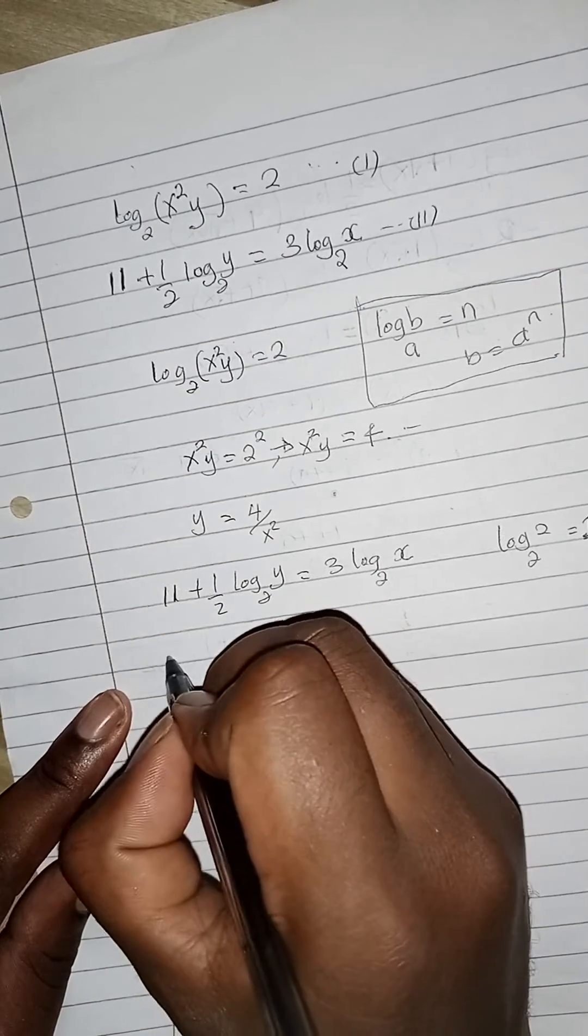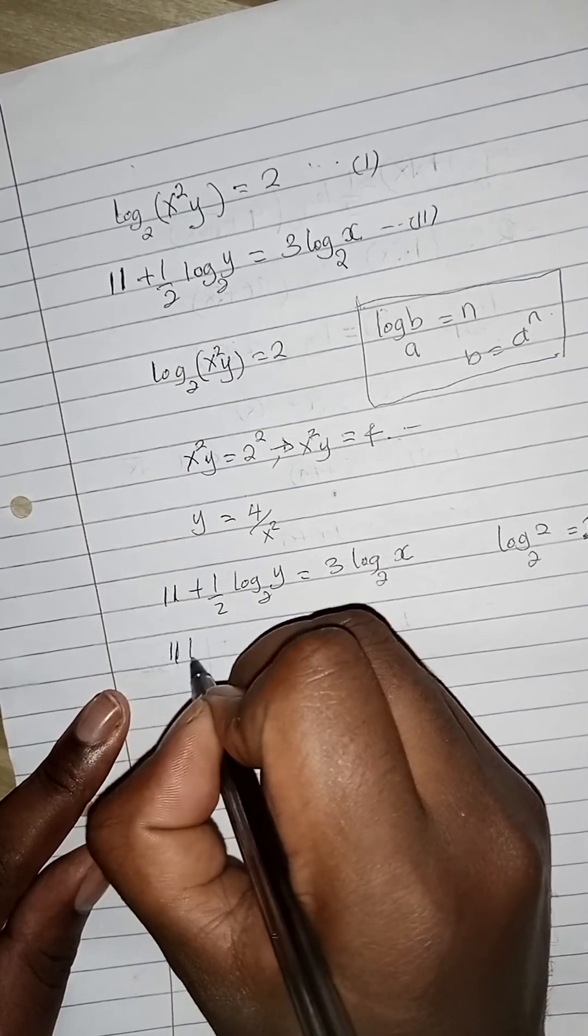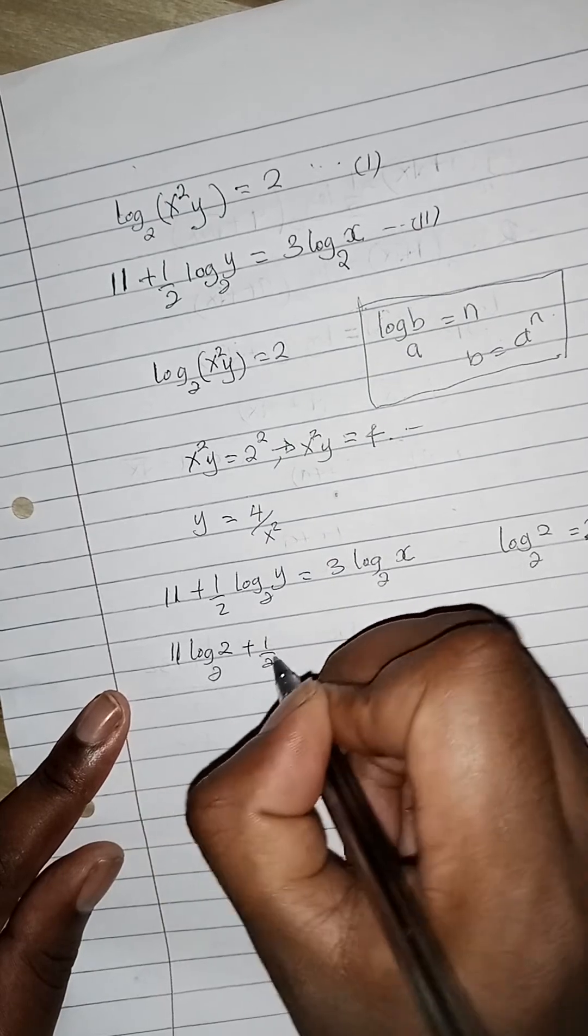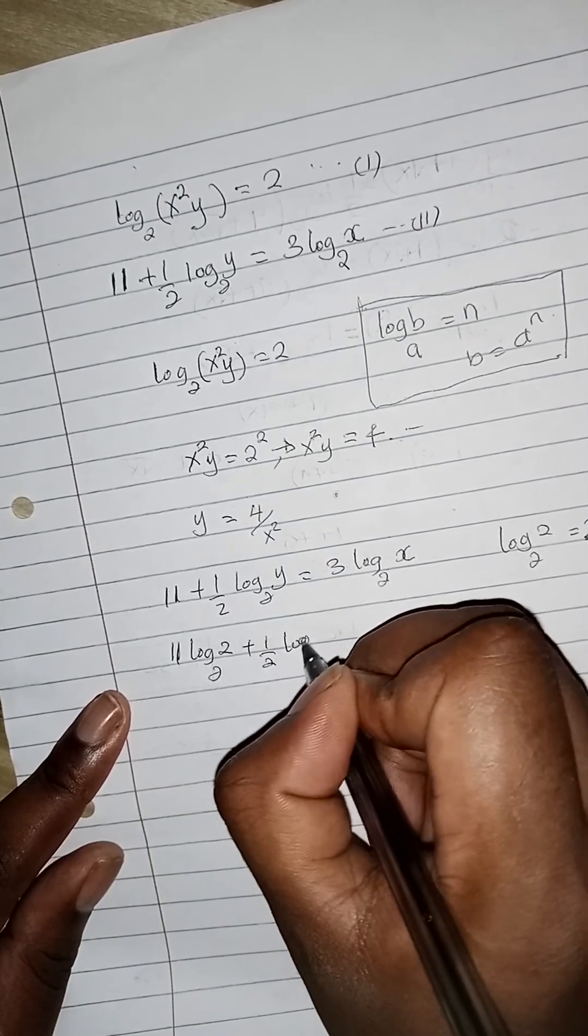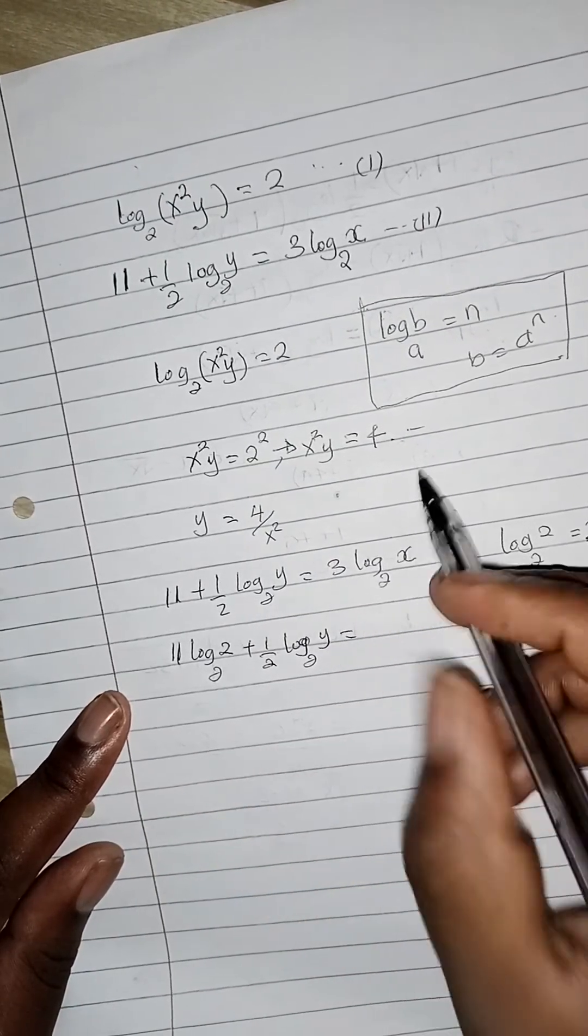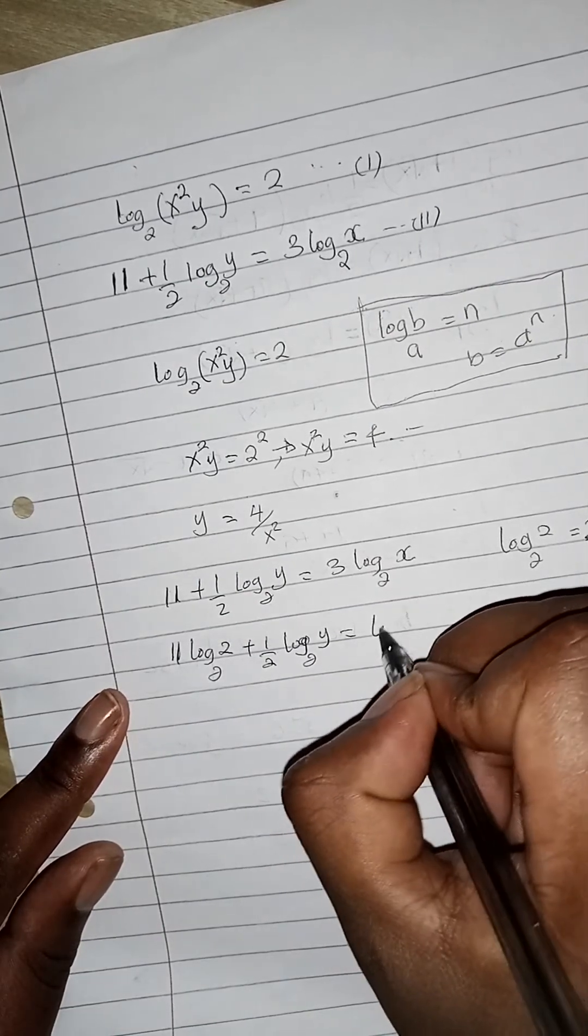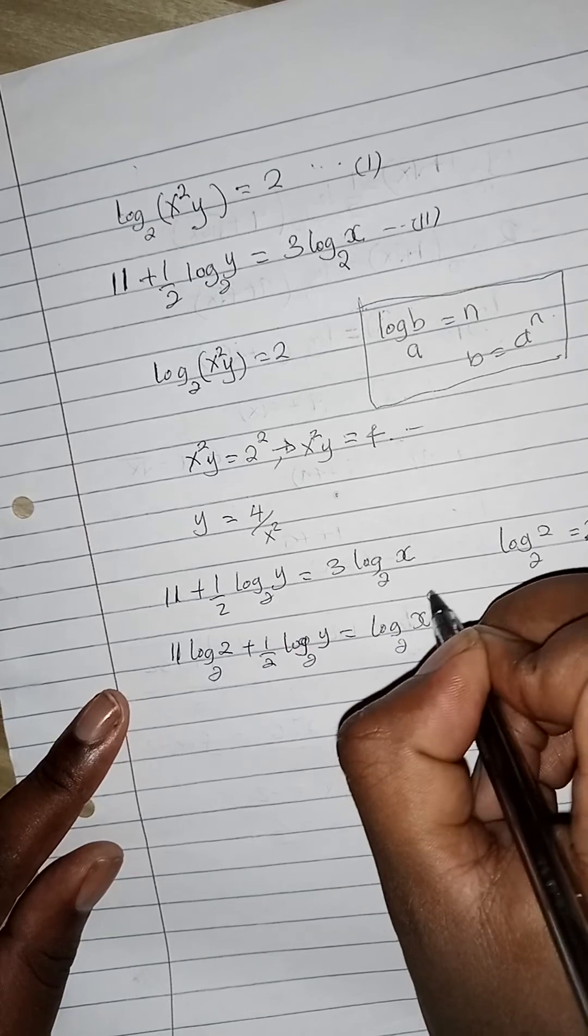We can modify this and say 11 log to base 2 of 2 plus a half log to base 2 of y equals, if we use the power rule, log to base 2 of x cubed.